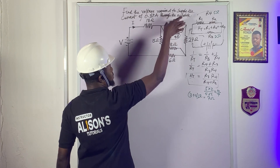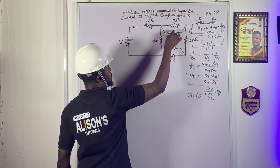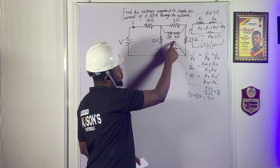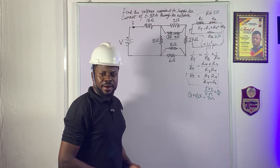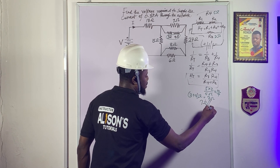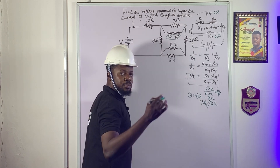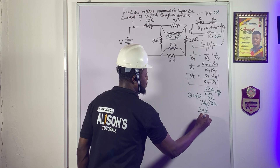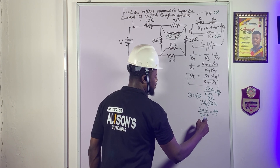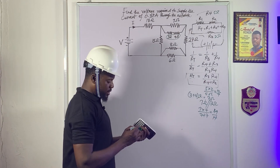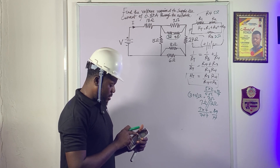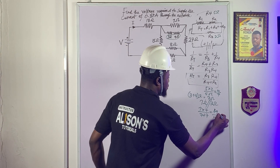That 7-ohm result is in parallel with the 7-ohm resistor — you can see the parallel connection here. Since 7 ohms is in parallel with 7 ohms, we calculate: (7 × 7) / (7 + 7) = 49 / 14 = 3.5 ohms. So those two branches together give us 3.5 ohms.